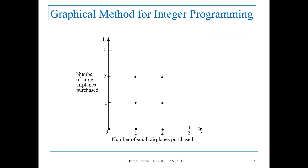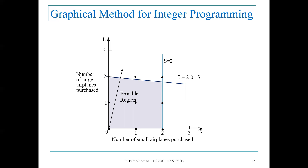Applying the graphical method for integer programming: we graph the LP relaxation feasible region, then apply the isoprofit line in the direction of improvement, and stop at the last integer point within the feasible region. We stop at the solution S = 0, L = 2. The optimal solution is to purchase zero small airplanes and two large airplanes, for a total annual profit of 2 × $5 million = $10 million.